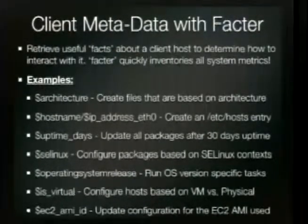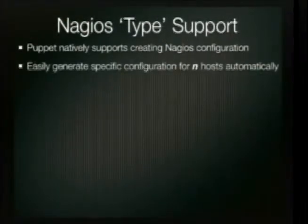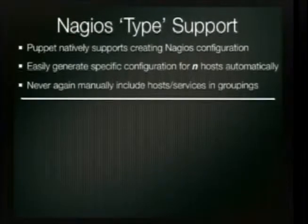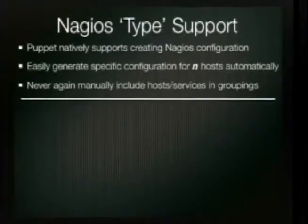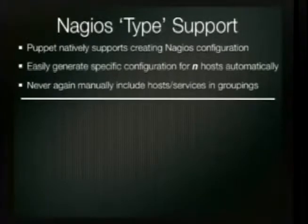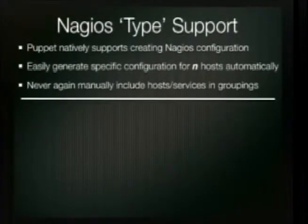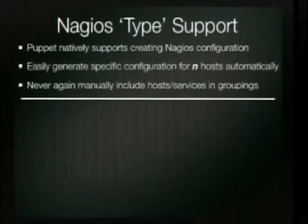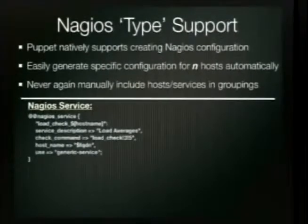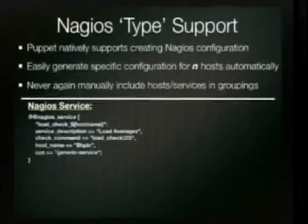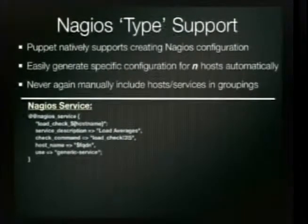Nagios is natively supported in Puppet. Anything you would create in Nagios you can create inside a Puppet manifest using the same primitives — instead of 'file' you use 'nagios_service' and add the host name, notifications, and so on. Currently I have 80 hosts with 1,800 checks and not a single one was done by hand. Host-service groupings, host groups, service groups — normally you'd have to place hosts manually in the right groups, but this takes that off your plate and puts it into orchestration.